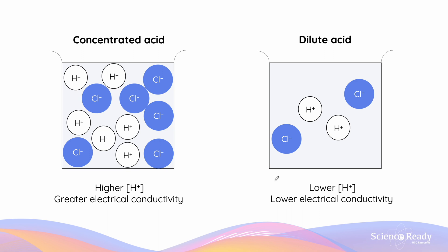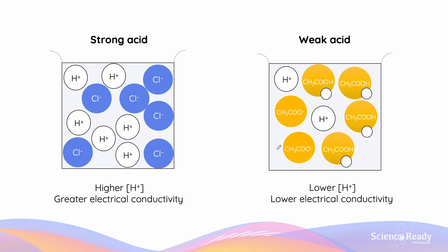A concentrated acid has a greater concentration of hydrogen ions, so we expect greater electrical conductivity. A dilute acid of the same type has a lower hydrogen ion concentration and thus lower electrical conductivity. Comparing a strong and a weak acid for an equal molar solution, the strong acid has a higher H⁺ concentration and greater electrical conductivity than the weak acid. However, a weak acid solution could have greater electrical conductivity than a dilute strong acid, which is why we can only compare equimolar monoprotic acid solutions.